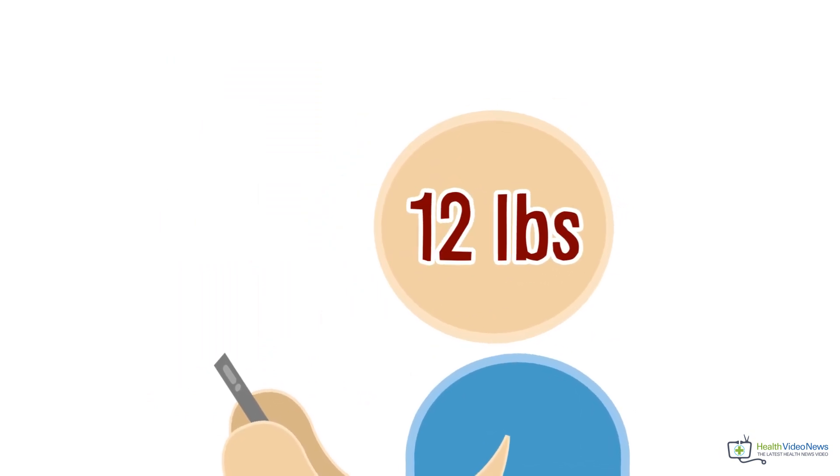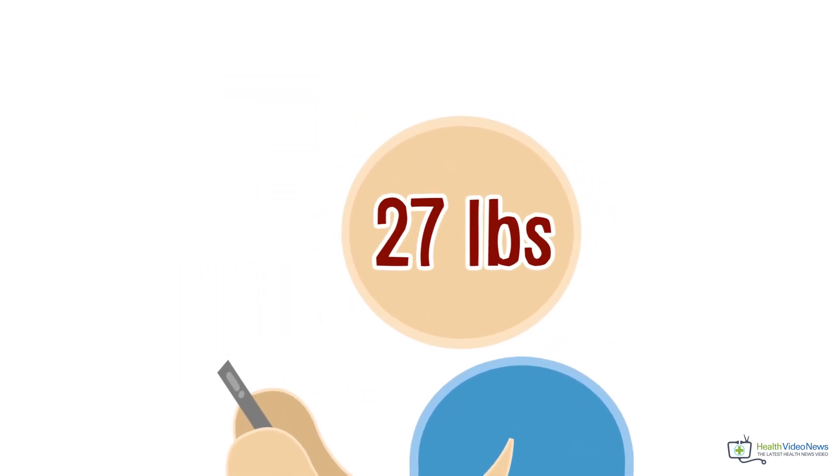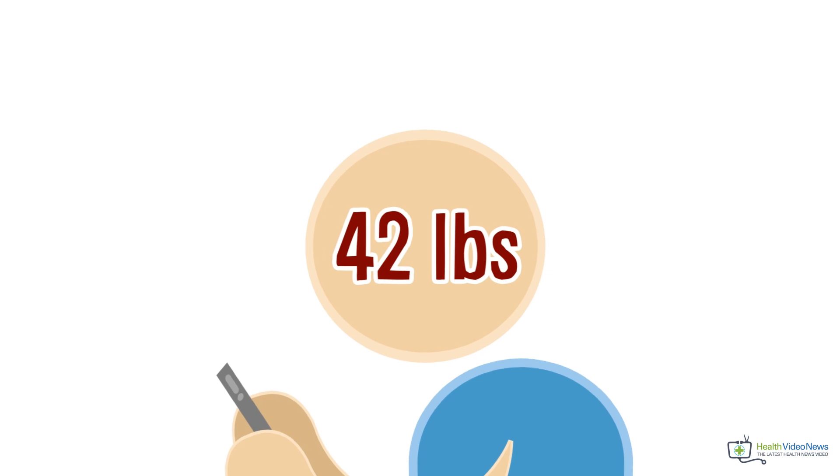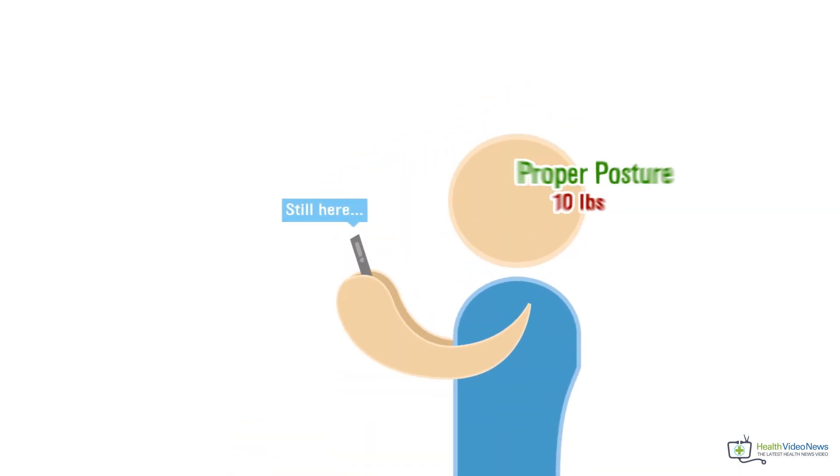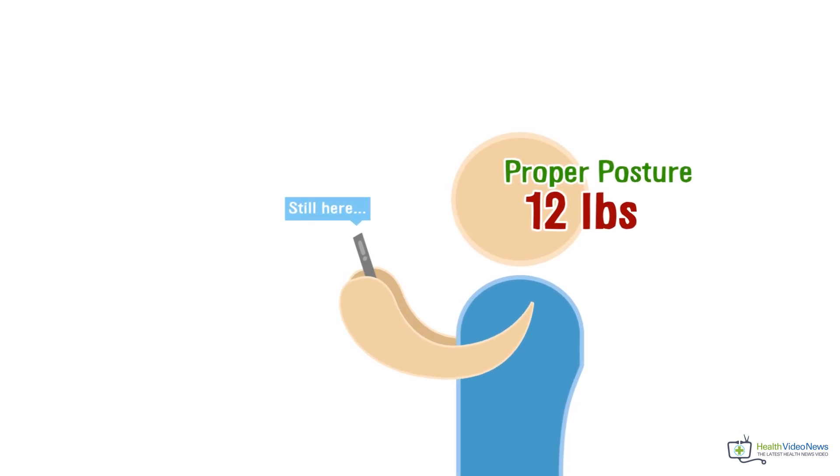The weight pressed on the spine increases with forward flexion of the head. As the angle of the head tilting increases, so does the forces acting on the neck. In a neutral position, the proper posture, the head only weighs around 10 to 12 pounds.